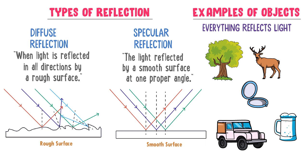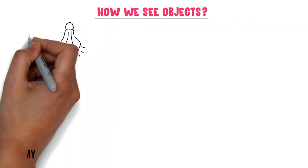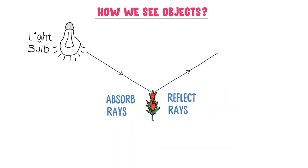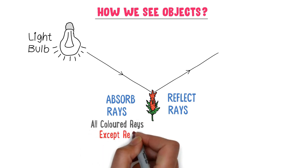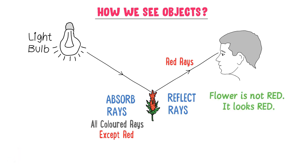How do we see things due to reflection? Consider a light source like a bulb or the sun. Light rays come from this source and hit a flower. The flower absorbs some rays and reflects the remaining ones — for example, it absorbs all colored rays except red. The red rays enter our eyes, hit the retina, and an image of the flower is formed, so we see a red flower. The flower is not red in reality; it looks red because it absorbs all other light rays and reflects back only red light rays.